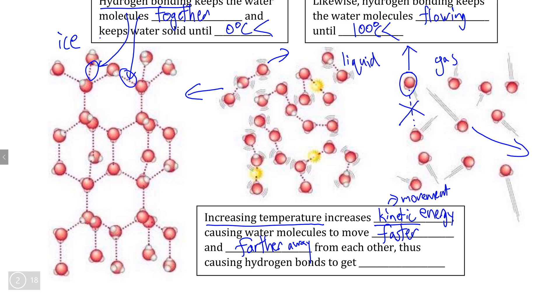So the farther away water molecules get from each other, that must mean that the hydrogen bonds are going to become weaker as multiple water molecules move farther away from each other, thereby preventing hydrogen bonds from forming.